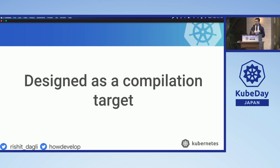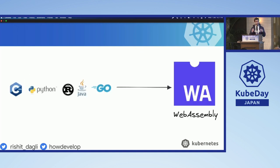Your WebAssembly bytecode is what interacts with the host environment. It's a polyglot environment, so whether you use functional programming languages, scripting languages like Python or JavaScript, or object-oriented languages like C++ or Java, those can all be compiled into WebAssembly. Whether you're coming from a web background, a DevOps background, or a Golang background, you'll find the ability to convert your functions written in those languages into WebAssembly bytecode.